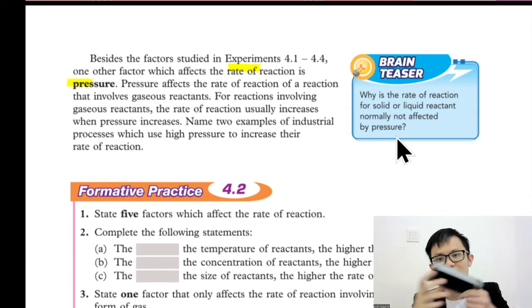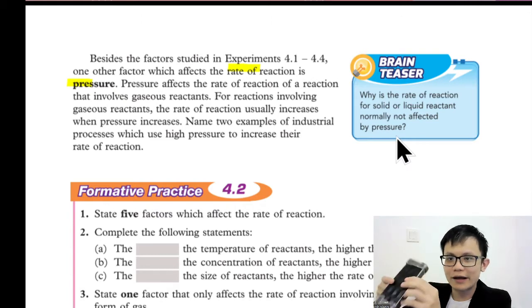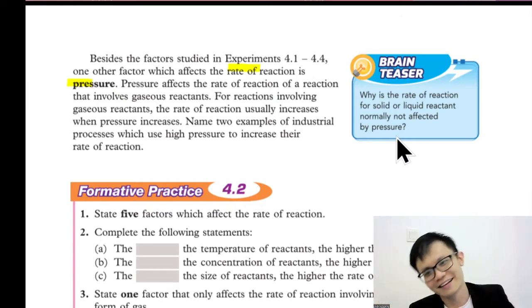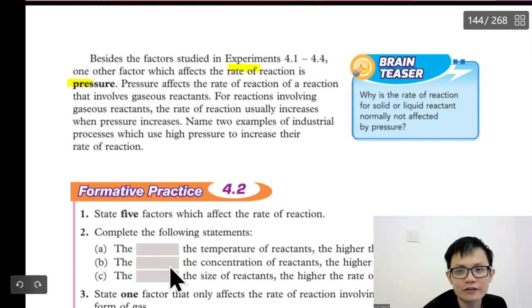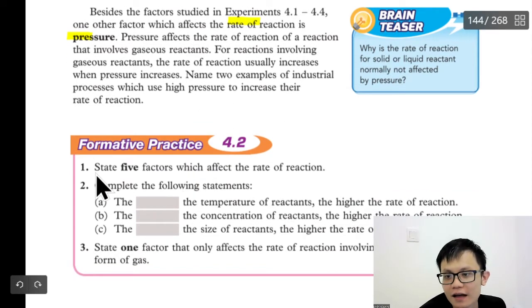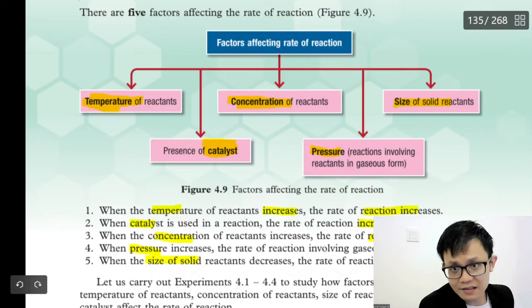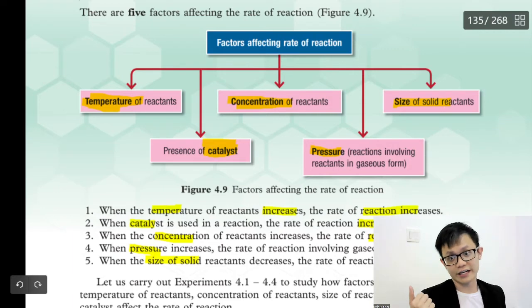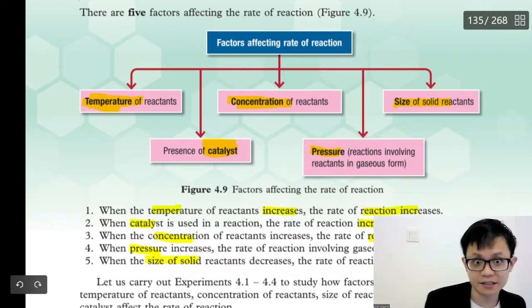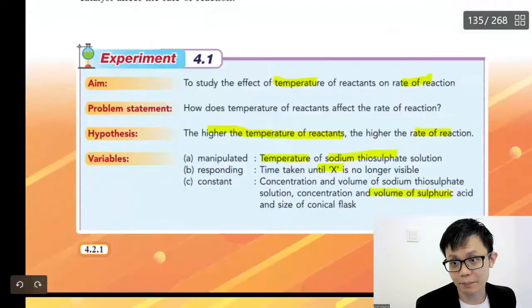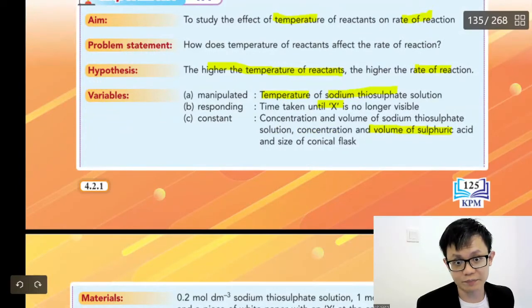Unless you bring it to a black hole to compress it, maybe you'd get a faster rate of reaction! So, to state the five factors that affect the rate of reaction: temperature, pressure, catalyst, concentration of reactants, and size of solid reactant. This is covered at page 125 in the book.